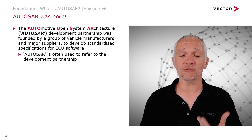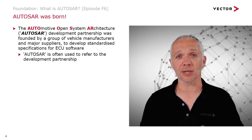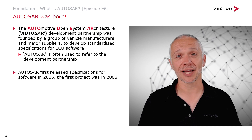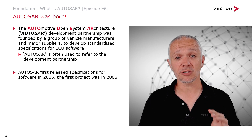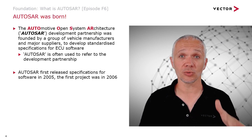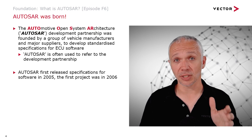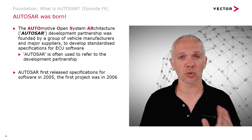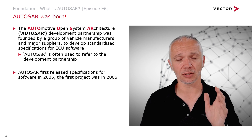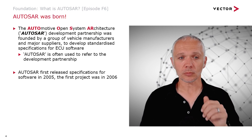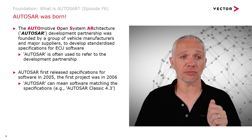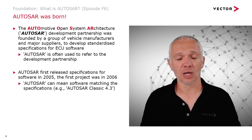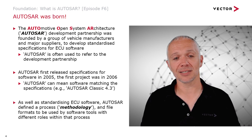AUTOSAR first released specifications for software in 2005, and the first project using AUTOSAR was in 2006. I'm recording this episode in 2021, so that's 15 years after that first project, meaning AUTOSAR in terms of concepts and content is very mature. AUTOSAR can also refer to software that matches those specifications — for example, AUTOSAR Classic 4.3 — or it can mean other things.